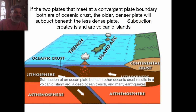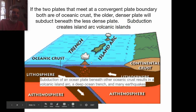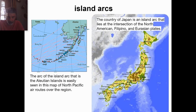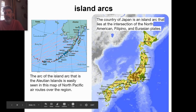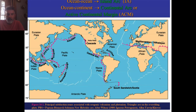The subduction process is the same if two oceanic plates meet. The older the oceanic plate, the more dense it is, and the older one subducts under the younger one. You still end up with a volcanic chain, but this time they'll be volcanic islands — island arcs — because they rise from the ocean floor rather than above a continent. Examples of island arcs include Japan, the Aleutian Islands, and the Philippines.